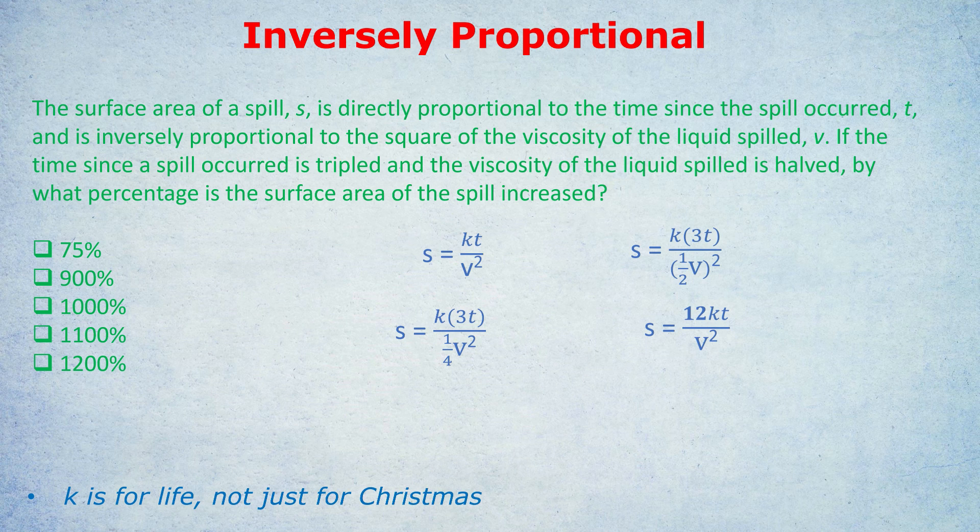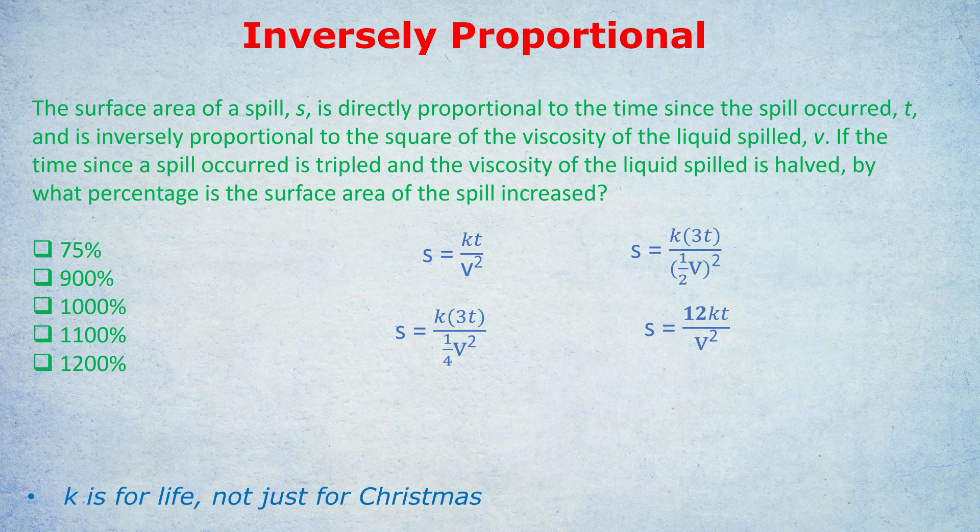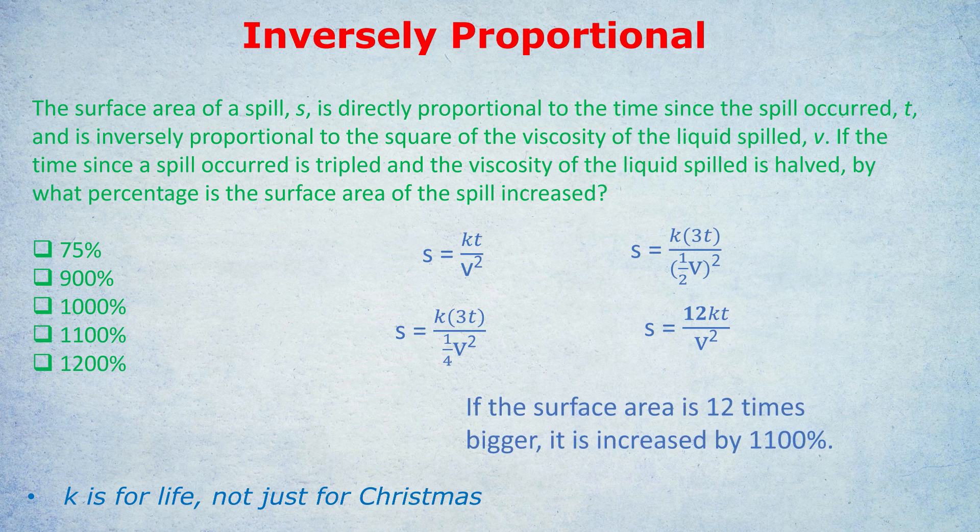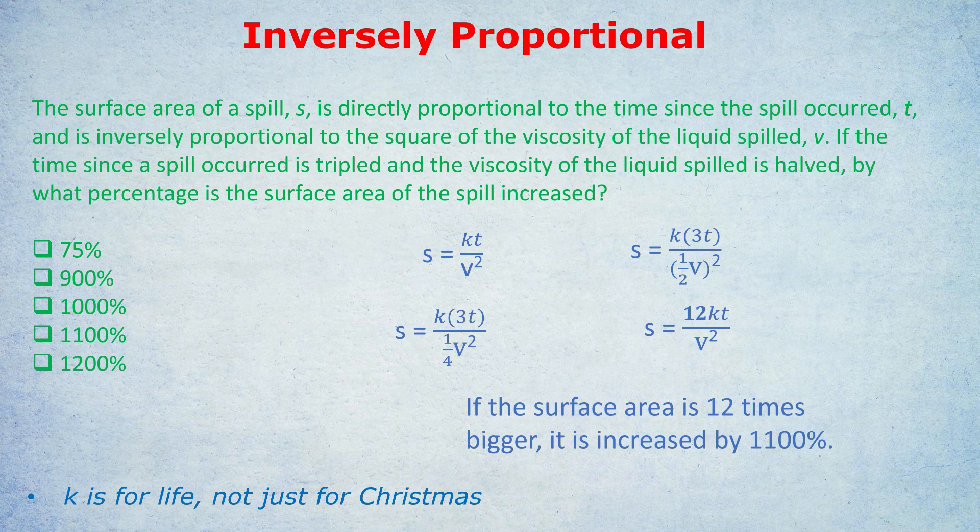Does that mean that it's increased by 1200%? No. If this is confusing, check out my percentage videos. But if something gets 12 times bigger, it is an 1100% increase. Just like if something gets 2 times bigger, it's a 100% increase, or 3 times bigger, it's a 200% increase. 12 times bigger, it's an 1100% increase. So D is the correct answer here.